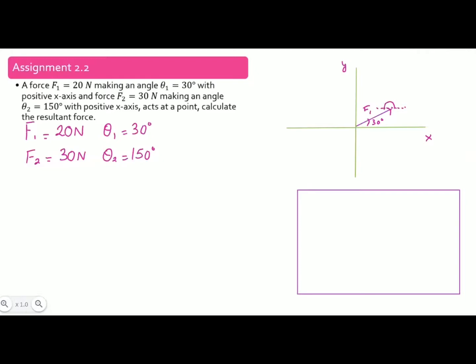The force F2 acts in the direction of 150 degrees with a magnitude of 30 Newton, starting from the head of F1. This is the vector F2 making an angle of 150 degrees with the positive x-axis. To find the resultant, we join the tail of the first vector with the head of the last vector. This gives us the resultant force F which we need to find.